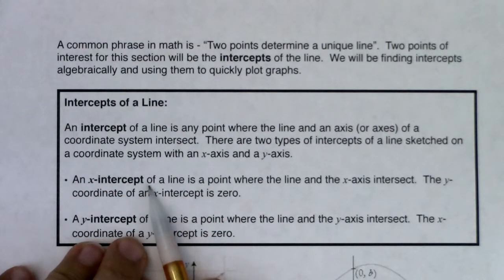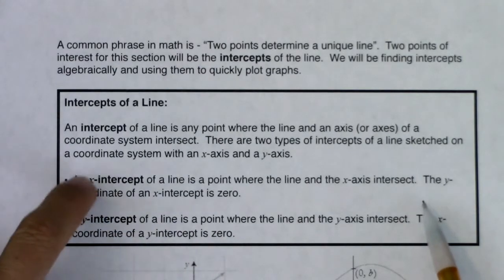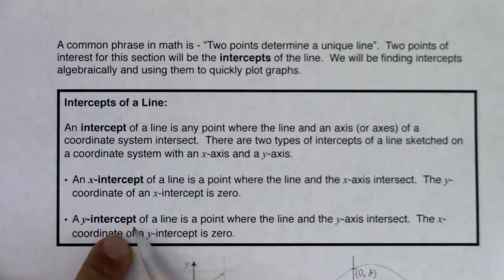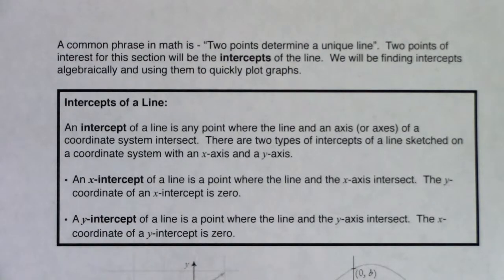An x-intercept of a line is a point where the line and the x-axis intersect. The y-coordinate of the x-intercept is zero. So just take note that the x-intercept, the opposite letter zeroes out. On the flip of that, a y-intercept of a line is a point where the line and the y-axis intersect. And the x-coordinate of the y-intercept is zero. So again, opposite letter zeroing out.